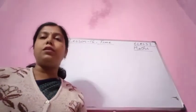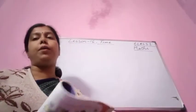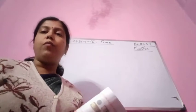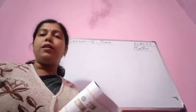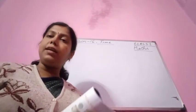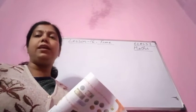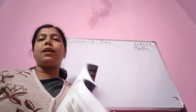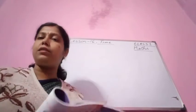First of all, we are going to study about the days of the week. What are they? Monday, Tuesday, Wednesday, Thursday, Friday, Saturday and Sunday. These are the 7 days of a week.